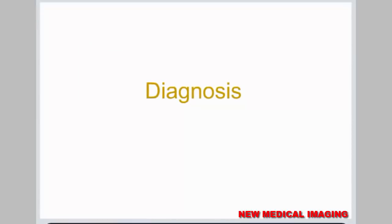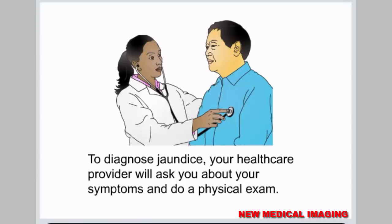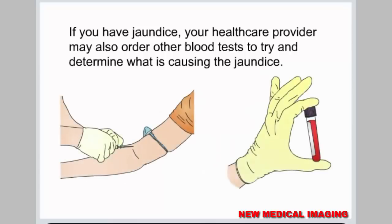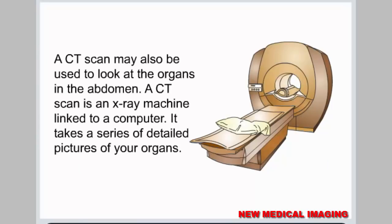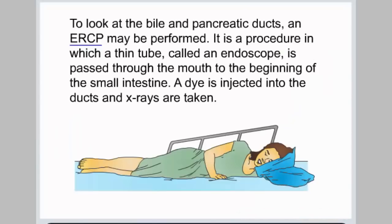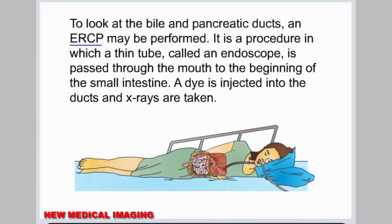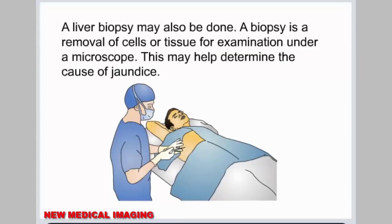Diagnosis. To diagnose jaundice, your healthcare provider will ask you about your symptoms and do a physical exam. They may also order blood tests to determine what is causing the jaundice. An ultrasound may be done to look at the gallbladder, liver, and other organs in the abdomen using sound waves that create pictures of the inside of the body. A CT scan — an x-ray machine linked to a computer — may also be used to take detailed pictures of your organs. To look at the bile and pancreatic ducts, an ERCP may be performed, in which a thin tube called an endoscope is passed through the mouth to the beginning of the small intestine, a dye is injected into the ducts, and x-rays are taken. A liver biopsy — a removal of cells or tissue for examination under a microscope — may also be done to help determine the cause of jaundice.